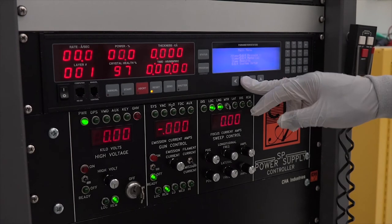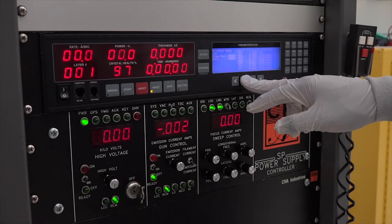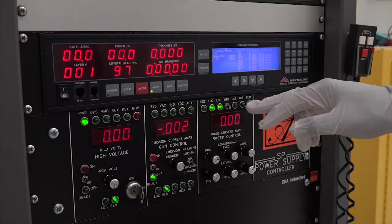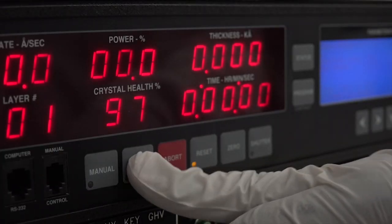We can now begin the e-beam deposition process. First, we select a recipe. This tells the computer which material or sequence of materials that we want to deposit. We then enter the desired thickness. Here we enter 75 nanometers, and then press the start button to begin the process.